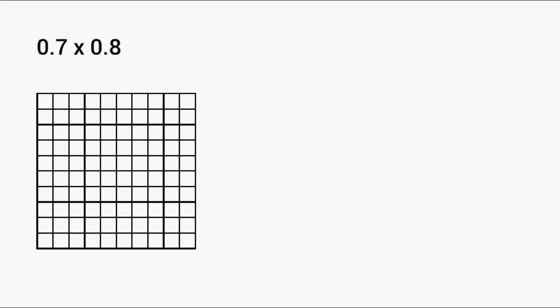What we're going to do today is practice creating an area model to represent a given decimal multiplication problem. Let's start with 0.7 multiplied by 0.8.